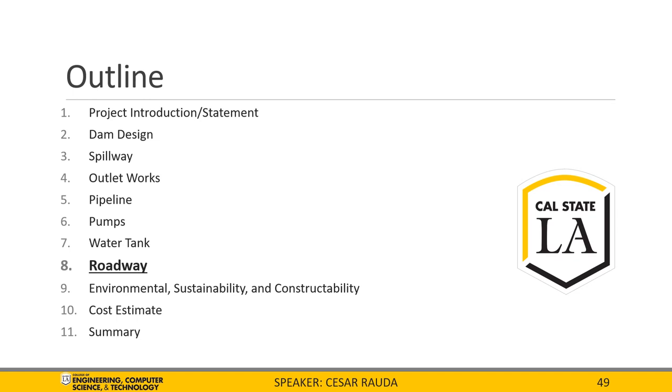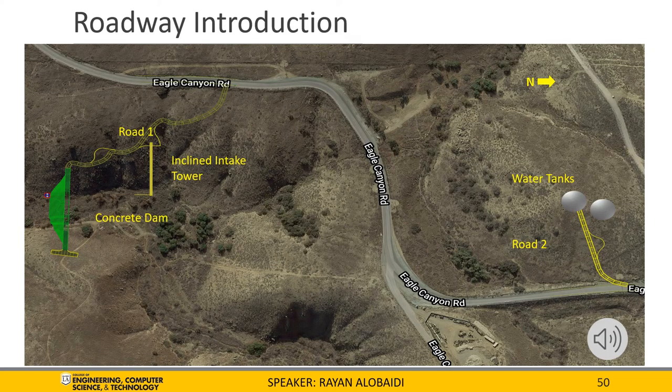Now onto the roadway portion of this presentation. For the roadway design, we have designed the roadways to be the most cost-effective roads by analyzing the profiles, cross section, cut, and fill volumes. We have designed two roads: road number one connects Eagle Canyon Road to the concrete dam, goes over the dam to reach a hammerhead turnaround area, and will have two turnouts close to the middle of the road, and will be a one-lane road. The second road will be about 1,600 feet away from the dam, connecting the water tanks to Eagle Canyon Road, curved into Eagle Canyon Road for easier access, with one turnout area in the middle.